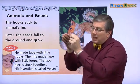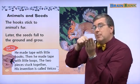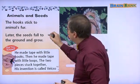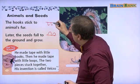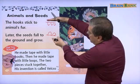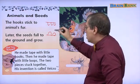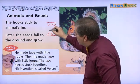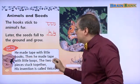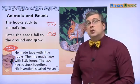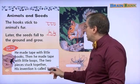He made tape with little hooks. Then he made another piece of tape with loops. So one tape has hooks and the other tape has loops. What will happen if you stick the two tapes together? The hooks catch onto the loops and the two pieces stick together. Do you know what his invention is called? You maybe use it every day. His invention is called Velcro.